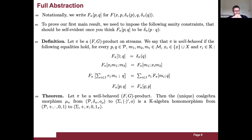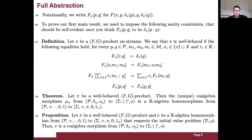Our main theorem states that if we have a well-behaved FG product pi, then the unique co-algebra morphism mu_pi from polynomials with derivatives delta_pi to streams is also a k-algebra homomorphism from polynomials with the usual sums and product pi. Conversely, if we have a k-algebra homomorphism nu from polynomials to streams that respects the given initial value problem, then nu is also a co-algebra morphism — and since streams is the final co-algebra, nu can only be mu_pi. This provides the full abstraction result.